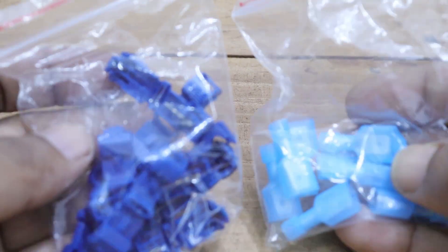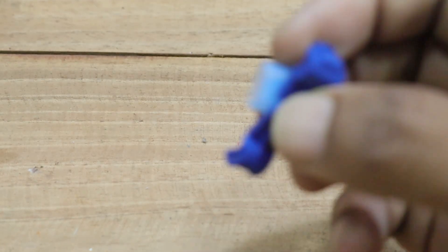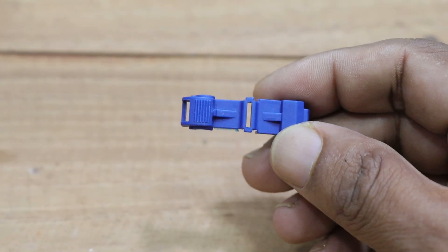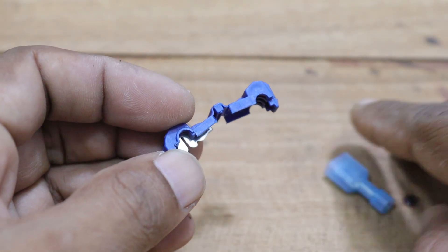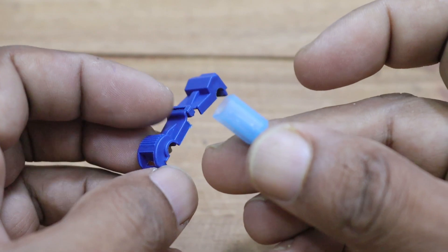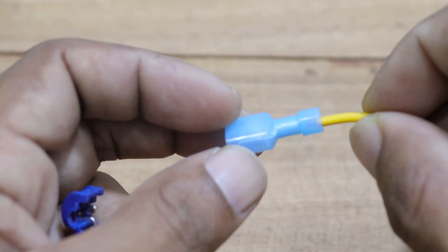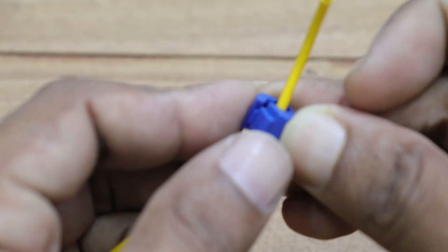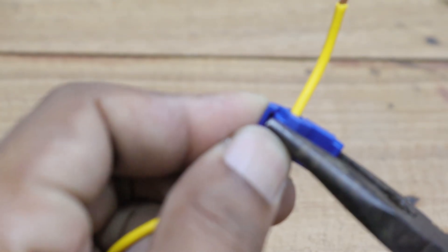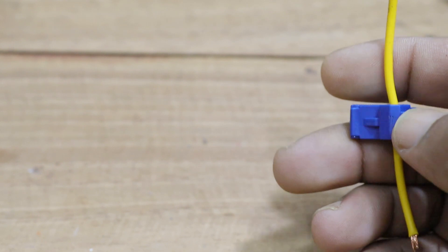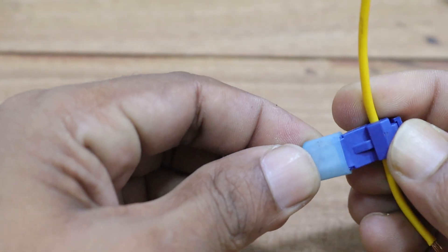T-Shape Electrical Wire Connectors Quick Splice Crimp Terminals Block Lock are designed for efficient and secure wire connections. These connectors are suitable for wire sizes ranging from 0.5-4 mm², corresponding to 22-18 AWG, 12-10 AWG, and 18-14 AWG.